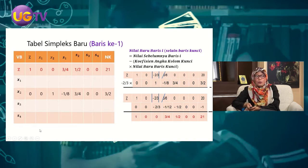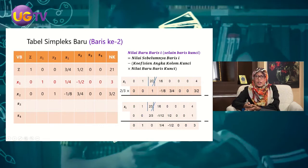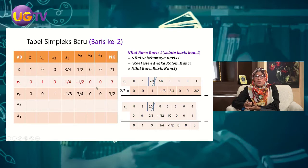Untuk baris kedua yang baru, rumusnya sama: nilai baris kedua baru = nilai baris kedua lama dikurangi koefisien angka kolom kunci dikali baris kunci baru. Koefisien angka kuncinya adalah 2/3, dikalikan dengan baris kunci yang baru, kemudian baris lama dikurangkan. Hasilnya baris kedua baru: 0, 1, 0, 1/4, -1/2, 0, 0, dan 3. Hal yang sama dilakukan untuk baris keempat, dengan koefisien 5/3 dikalikan baris kunci yang baru, kemudian dikurangkan dari baris keempat lama.